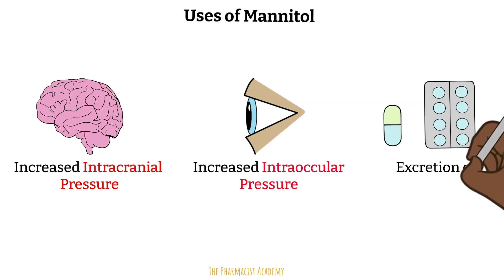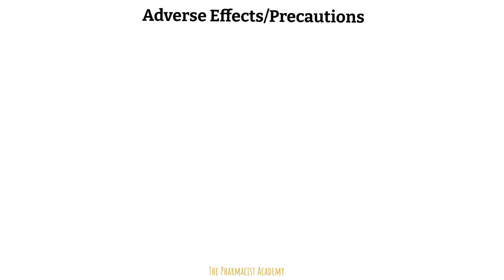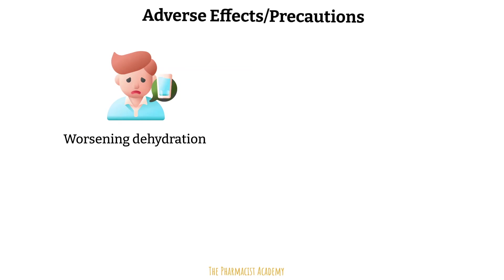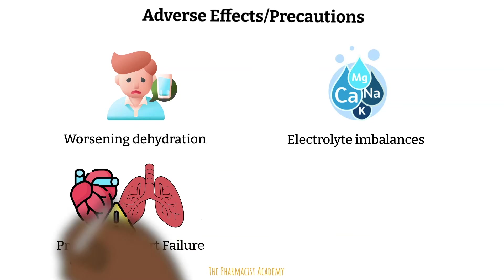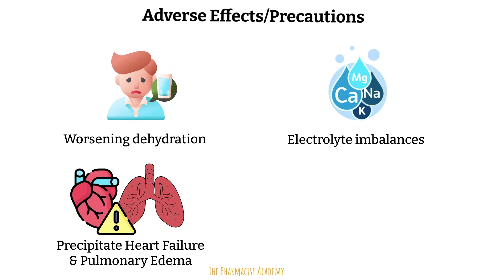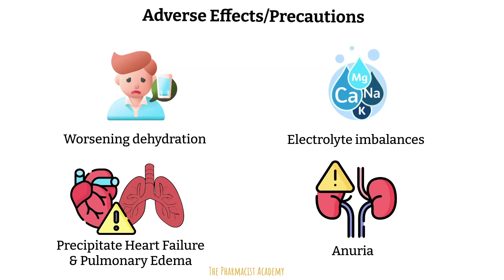Mannitol is also administered to enhance excretion of toxic materials or drugs that are water-soluble. There are multiple adverse effects and precautions, including masking or worsening dehydration as it causes diuresis, causing or worsening electrolyte abnormalities due to the decrease in free water in the intravascular space, which impacts the concentration or osmolarity of electrolytes. It can also precipitate heart failure and pulmonary edema due to rapid fluid shifts. Finally, you want to avoid using it in patients with established anuria due to renal disease, because mannitol can cause significant osmotic injury to the tubules, leading to acute tubular necrosis.